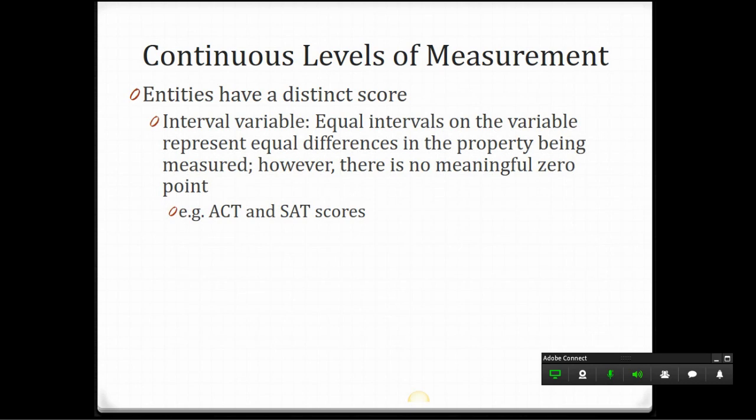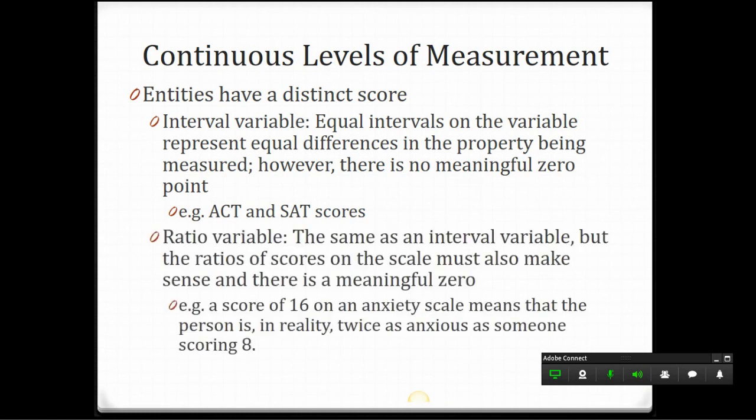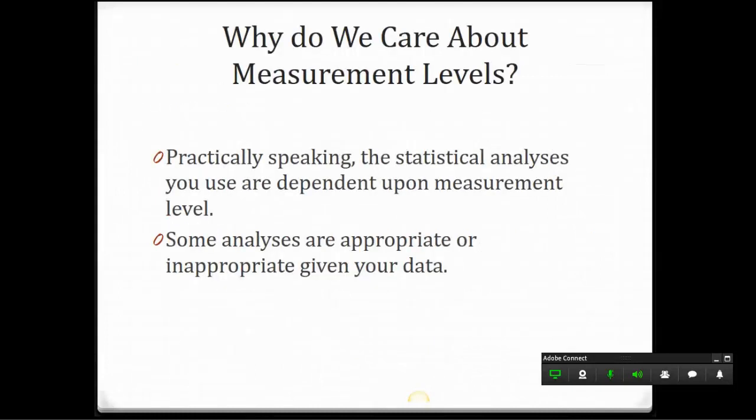Then we also have continuous levels of measurement. So the aforementioned variables were categorical. These are continuous. We've got intervals and ratios, but to be totally honest, these don't matter that much in our SPSS data set. We're not going to see a lot of differences in these variables, other than to say that sometimes with interval variables, we have to compare data like ACT or SAT scores that don't necessarily equal the same thing. So a ten-point difference in the ACT, say from a 26 to a 36, is not the same as a ten-point difference in the SAT, from a 1300 to a 1310. They're very different things. They have different meanings, so they don't have the same zero point. Practically speaking, the types of analyses that you use are dependent upon those measurements, and some analyses are appropriate or inappropriate given your particular set of data.